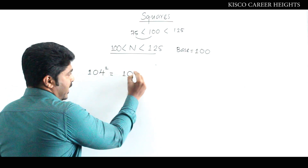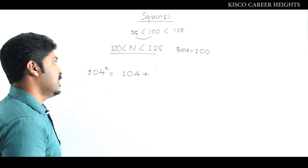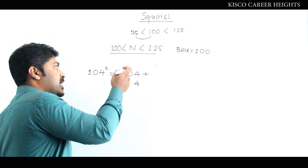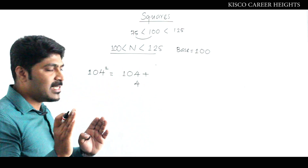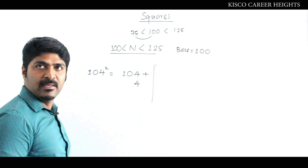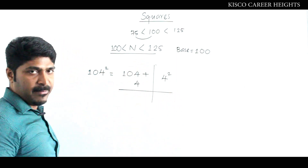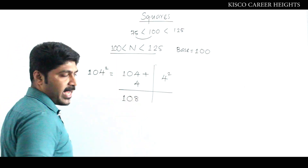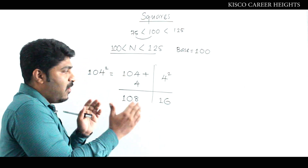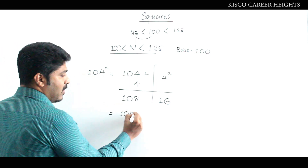The left side is simply the number plus the positive complementary — that is, 104 plus 4. In the previous type, we subtracted the complementary; here we add it. On the right side, that is the square of the complementary, which is 4 squared equals 16. The square is already a two-digit number, so no adjustment is needed. Hence, 104 squared equals 10816.